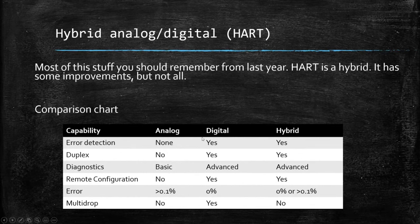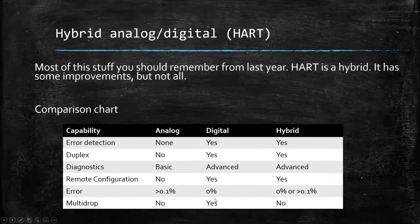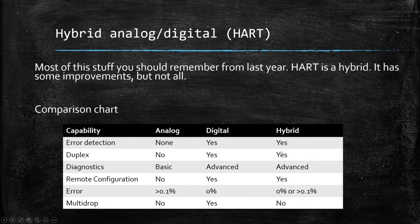Here's a comparison chart for hybrid, digital, and analog devices. Does analog have error detection? No. Digital? Yes. Hybrid? Yes, some. Analog has no duplex, basic diagnostics, no remote configuration, about 0.1% error, and no multi-drop. Digital gets the full meal deal — all the features checked, leather interior, club seats. Hybrid gets some of the features, not all, but you'll see an improvement over analog in most cases.